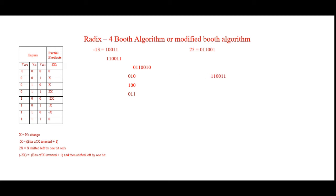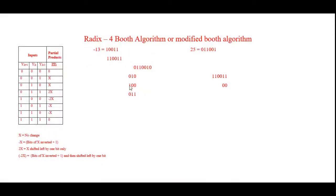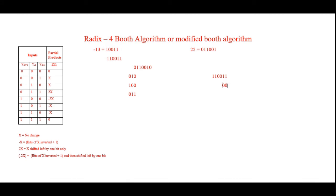For the next stage, the operation for group 100 is minus 2x. Minus 2x means invert the bits of x, add one, then shift left by one bit. I invert the bits of minus 13, add one, and shift left by one bit. I insert two zeros to leave space under the LSB stage, and the result I write here is 00110010.